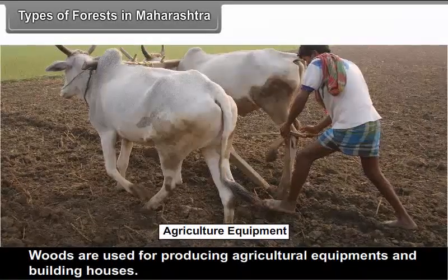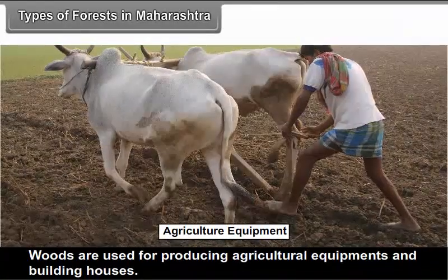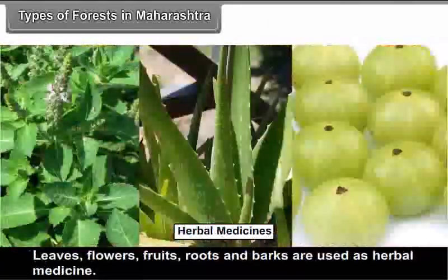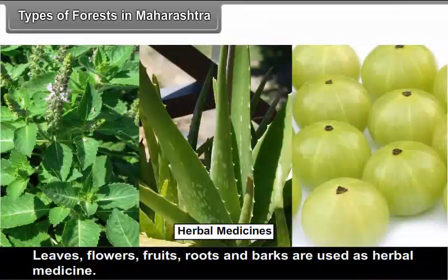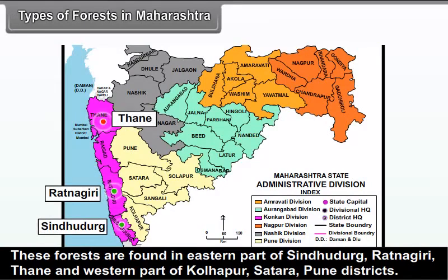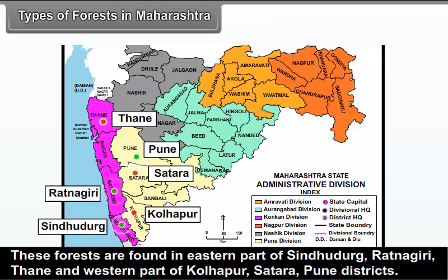Woods are used for producing agricultural equipment and building houses. Leaves, flowers, fruits, roots and barks are used as herbal medicine. These forests are found in the eastern part of Sindhudurg, Ratnagiri, Thane and western parts of Kolhapur, Satara and Pune districts.